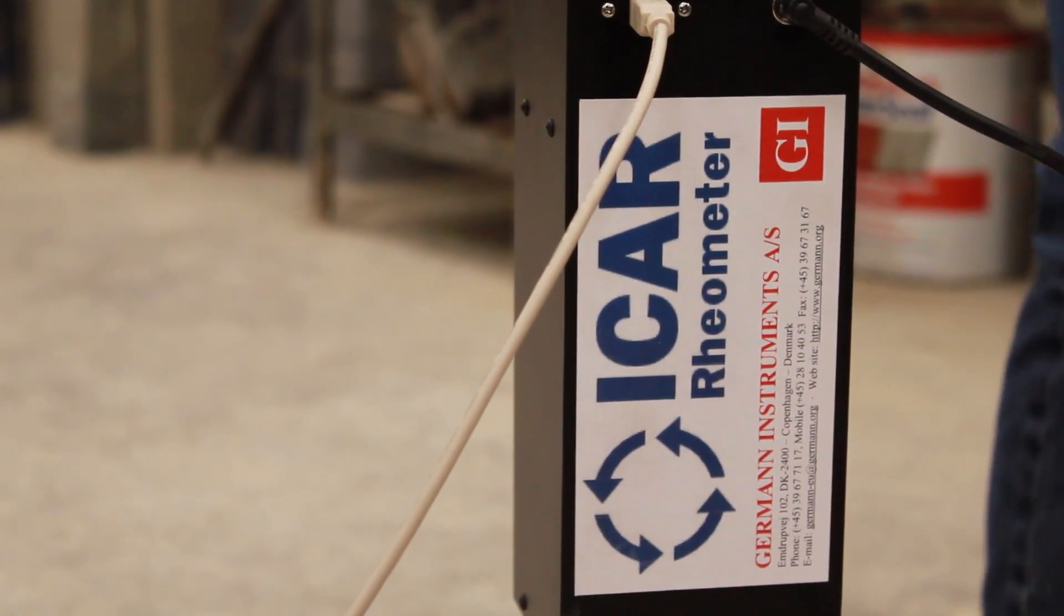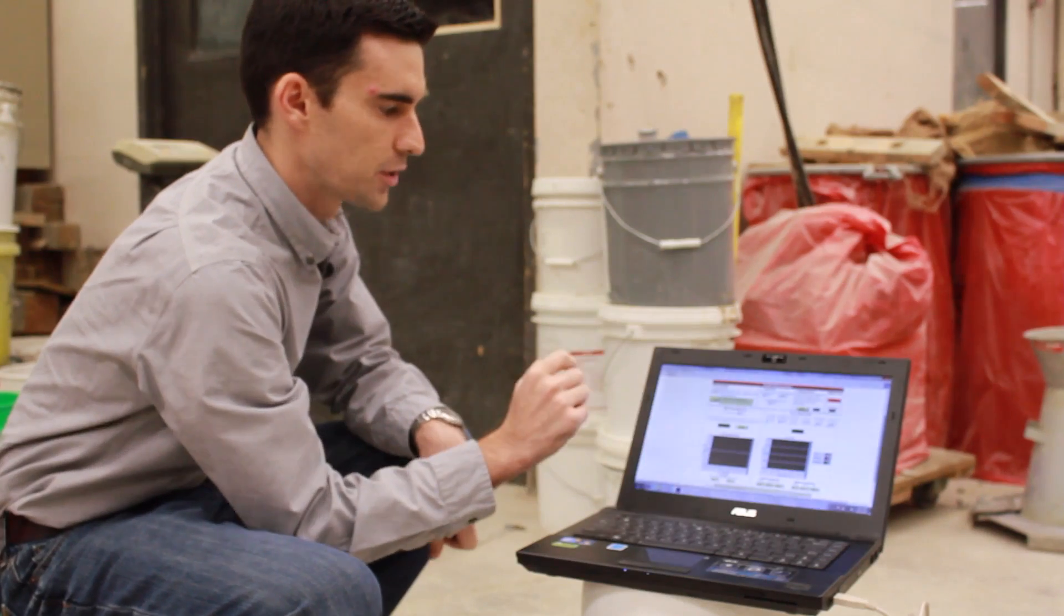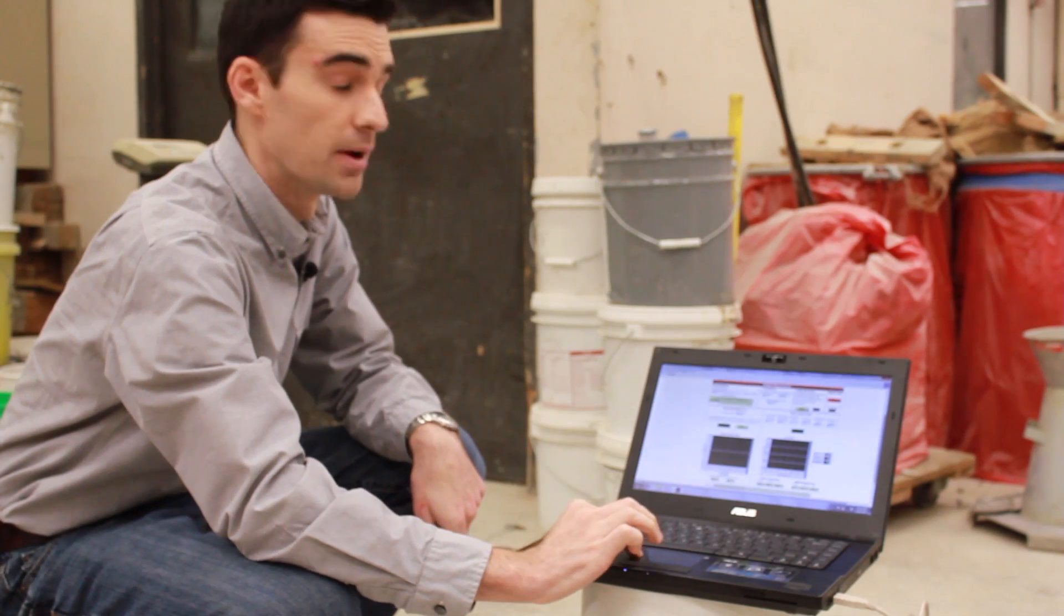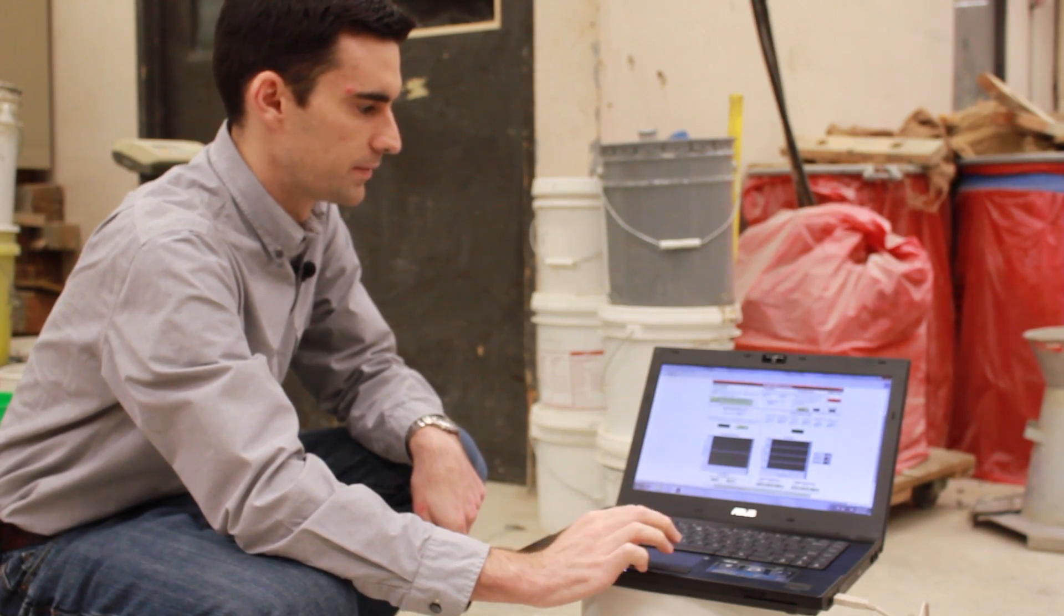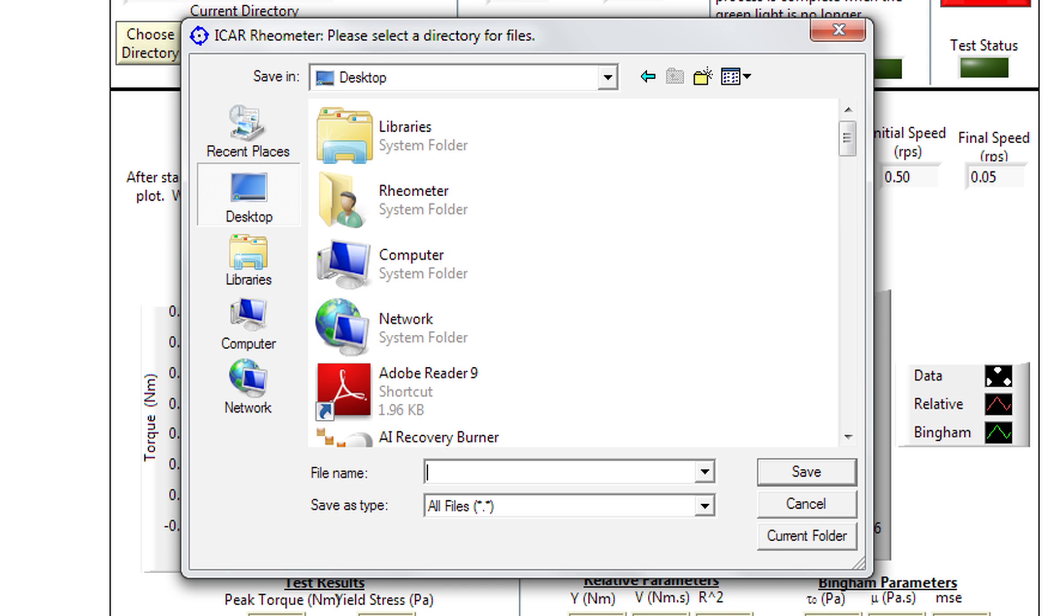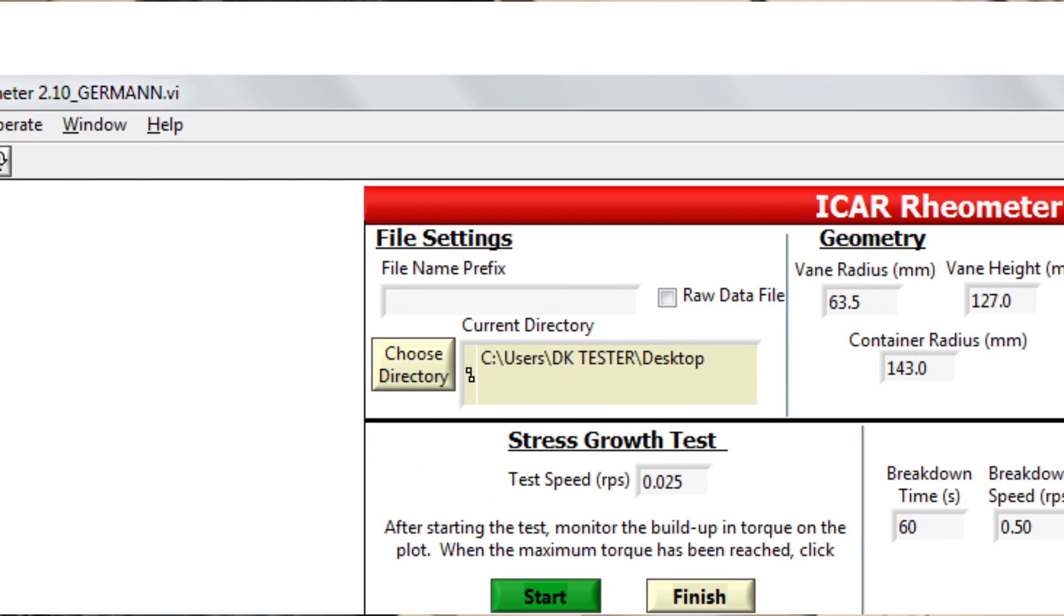Now let's take a look at the rheometer software. First thing we do is set up the location and name of the file. We first click on choose directory and decide where we want to save the file. Today we'll save on the desktop. We then input the name of the file. I'm going to call this first test test1.